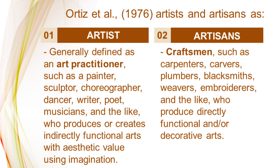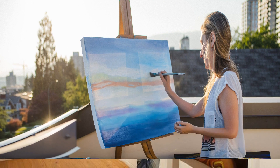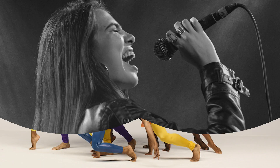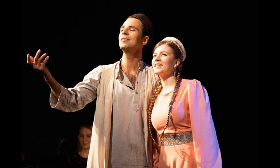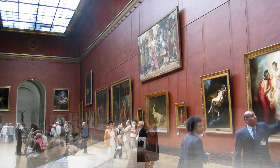What is an artist? According to Ortiz et al. 1976, an artist is generally defined as an art practitioner such as a painter, sculptor, choreographer, dancer, writer, poet, a musician, and the like who produces or creates indirectly functional arts with aesthetic value using imagination. So an artist creates or produces art which is indirectly functional — meaning beauty or aesthetic value using their imagination is most important to them. Their only objective is to express their emotion and imagination through their canvas or through movement. So the artist focuses on creating aesthetically pleasing works.